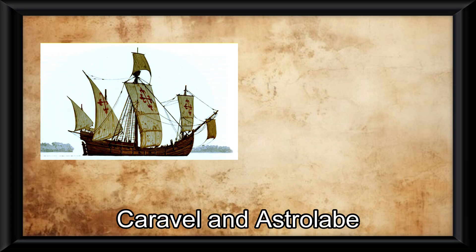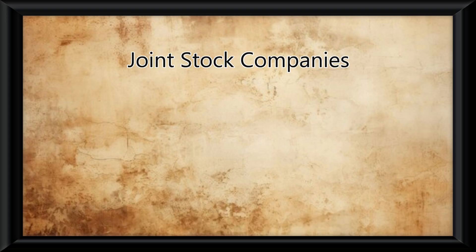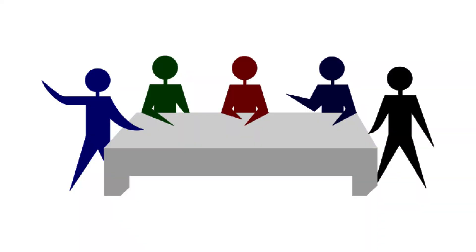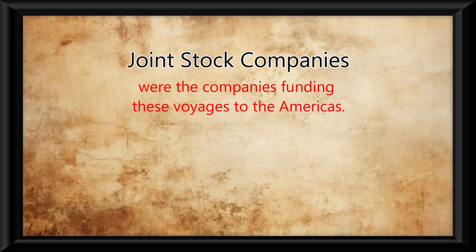Also during this time, maritime technologies underwent massive improvements such as the caravel and astrolabe, meaning it was easier for people to explore. What also made it easier was the implementation of joint stock companies. This was a company that a bunch of people could pool their money into, so if it did well they would all earn money, if not they could only lose their initial investment, so it was very low risk. These joint stock companies were the companies funding these voyages to the Americas.